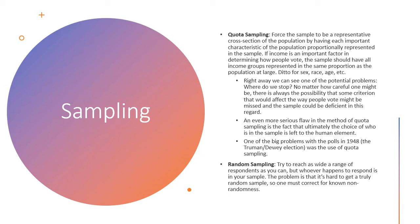A much more serious flaw in quota sampling is that ultimately the choice of who is in the sample is left to the human element. If you're a pollster trying to gather a sample and you say, 'We need this many more 50-year-old women' or 'this many more middle-income Latinos,' going out and looking for those people to fill your sample introduces all kinds of biases into the way the sample is collected. That ends up introducing various subtle forms of bias into the sample, even though the goal was to make a representative sample.